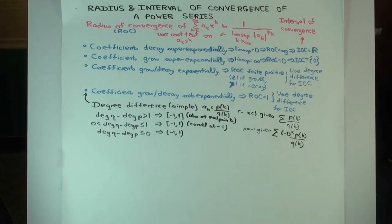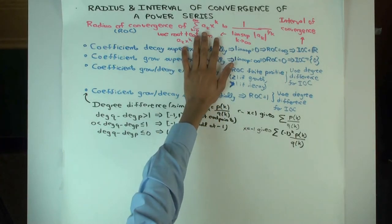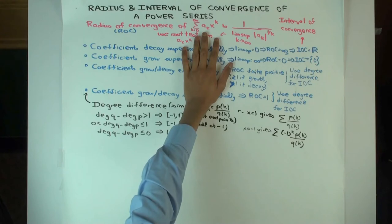Okay, so in this talk we are going to build on a continuation of a previous talk where we consider the situation where we have a power series, summation a_k x to the k, the coefficients are growing or decaying sub-exponentially and we are really concerned about polynomial type growth and decay.